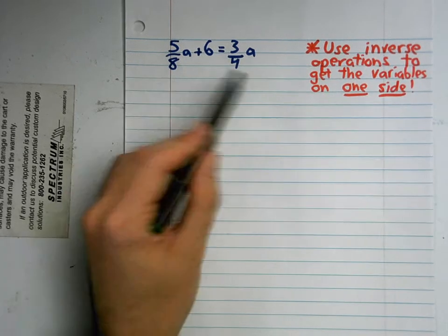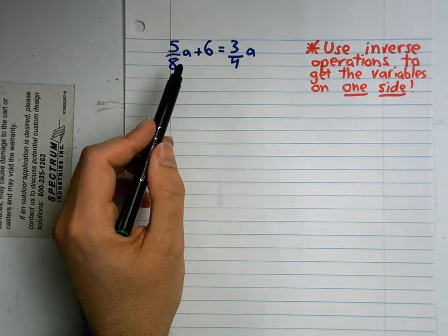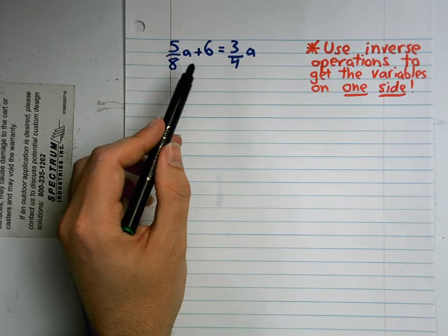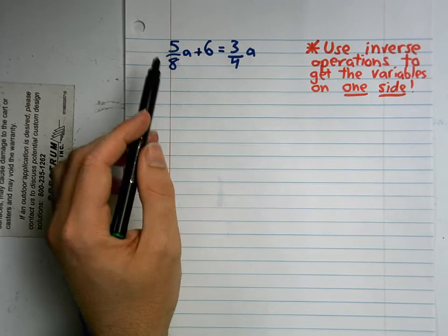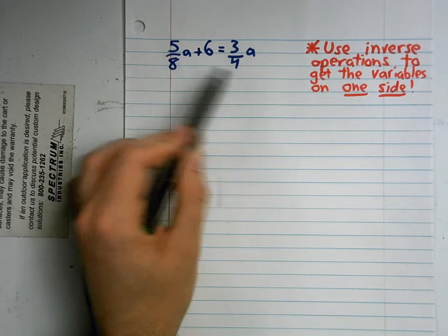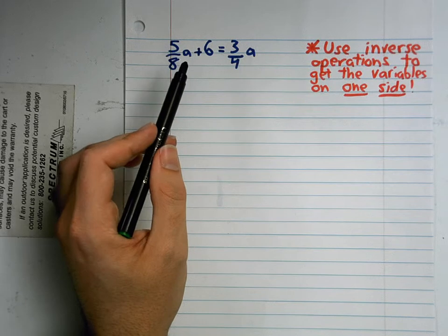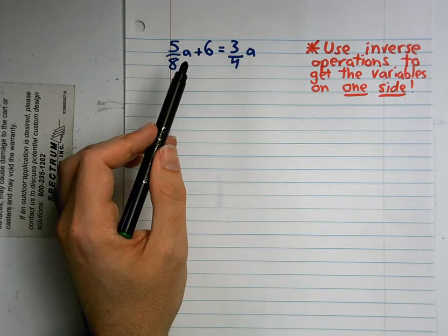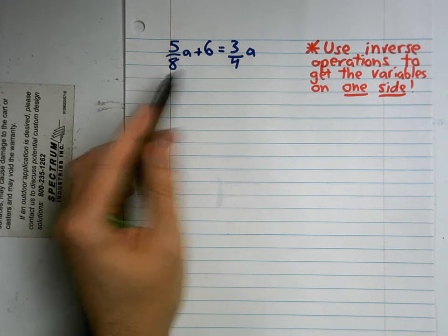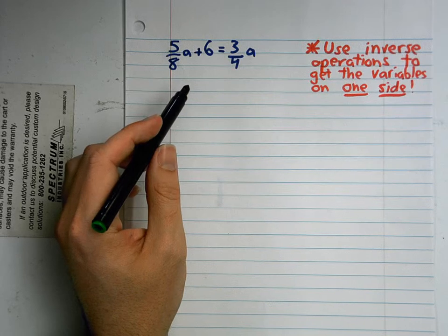we still just had to remember to use inverse operations to get the variables on one side. We had practiced combining like terms earlier in the year and it really helps us out when we get to this. But when we got to problems where there were fractions, it seemed to throw people. They weren't exactly sure what to do and how the fractions were going to make the problem different or more difficult.